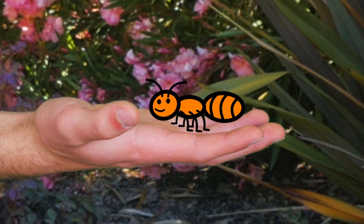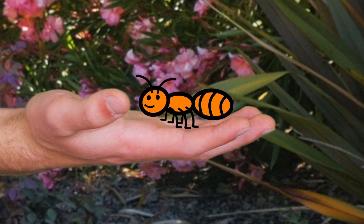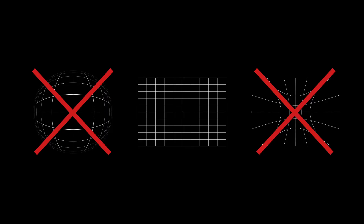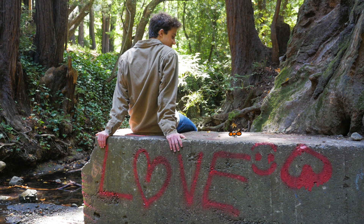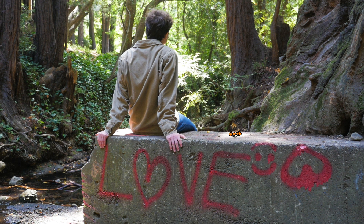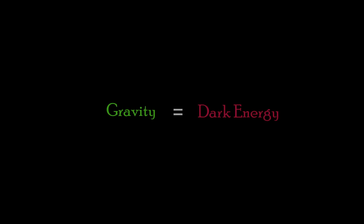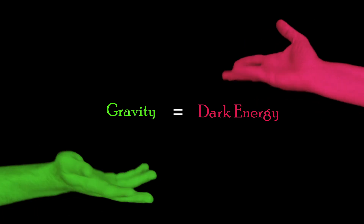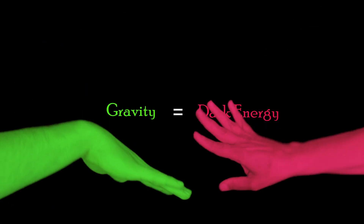So our fate depends on the shape of the universe? Yep, and so far we haven't detected any universal curvature. Does that mean our universe is flat? That's what we think so far. But the question I have: why is gravity perfectly balanced with dark energy? Truly a mystery.